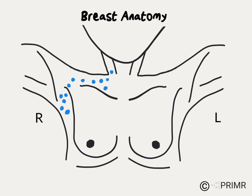Under normal circumstances, fluid in the breast drains to lymph nodes in the armpit and just above the clavicle, also known as the collarbone. If there are cancer cells in the breast, they can also follow this pattern of spread, and this can be important both for surgery as well as for radiation and chemotherapy.